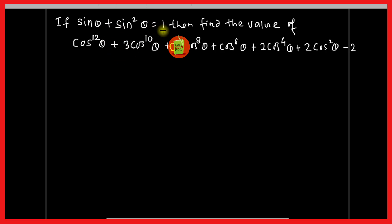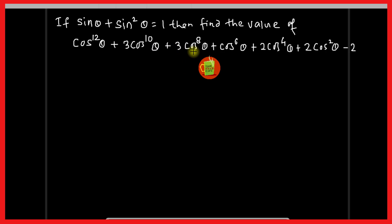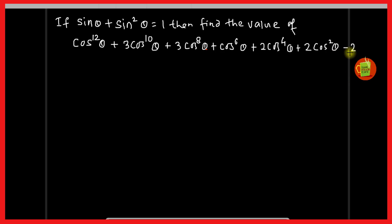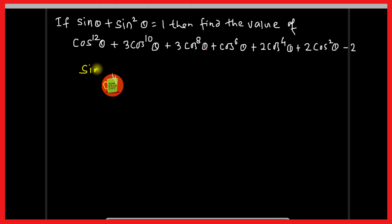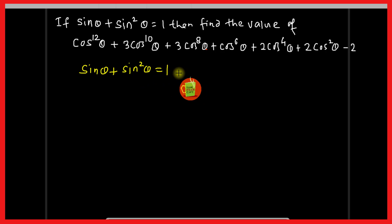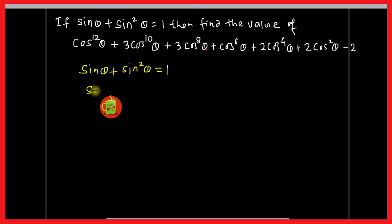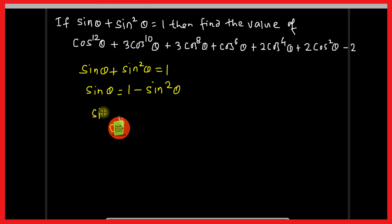The next question: if sin θ plus sin² θ equals 1, then find the value of cos¹²θ plus 3cos¹⁰θ plus 3cos⁸θ plus cos⁶θ plus 2cos⁴θ plus 2cos²θ minus 2. It is given that sin θ plus sin² θ equals 1, so sin θ equals 1 minus sin² θ, which equals cos² θ. So sin θ equals cos² θ — let this be equation 1.